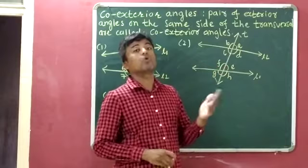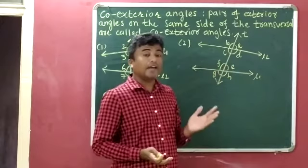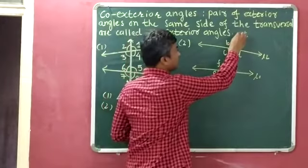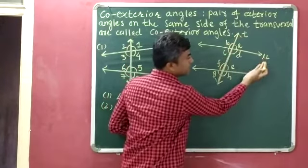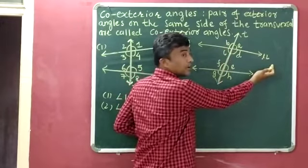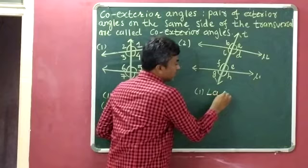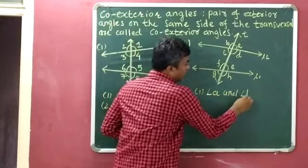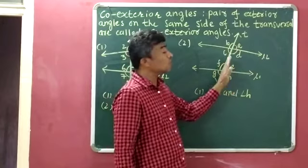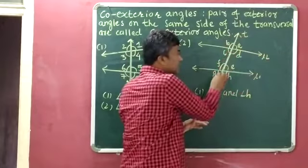Now we have to identify co-exterior angles in figure 2. According to the definition, co-exterior angles are exterior angles that lie on the same side of the transversal. This is the transversal — it has one side and a second side. On the first side of the transversal, the exterior angles are angle A and angle H. So the first pair is angle A and angle H. They are co-exterior angles because they are exterior angles lying on the same side of the transversal.